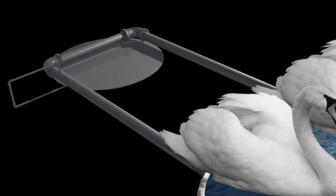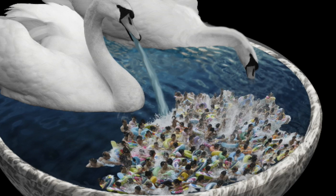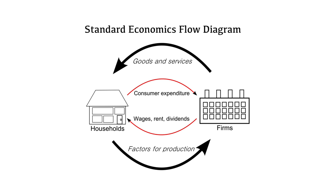Now let's add an elastic storage tank to the system. This represents savings accounts at banks. The water in the pond and the water circulating in the pipes represents the available money from which all debts must be paid. Other than extinguishment of principal debt to a bank and the creation of new water via the input swan, nothing that happens in the pond can ever change the total volume of water. What happens in the pond stays in the pond. Previously I showed you the standard economics flow diagram — all of that activity takes place within the pond.